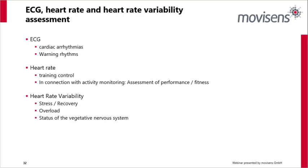ECG is a powerful tool — every hospital uses it to detect cardiac arrhythmias, warning rhythms, and other anomalous heartbeats. Heart rate is a useful metric for training control, such as zone 2 training, and can be used in connection with activity monitoring and assessment of performance and fitness. Heart rate variability is a really powerful tool used for stress, recovery, and overload assessment — it gives a beautiful insight into the status of the vegetative nervous system. Limited heart rate variability is a reliable predictor of sudden cardiac death after a heart attack, so variability is a good thing.